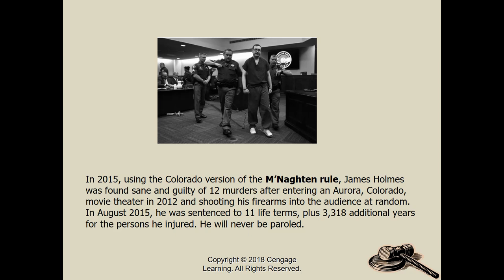James Holmes — back in 2012 when one of the Batman movies came out — dressed up as the Joker, went into a movie theater, and shot at random. He was found sane. He clearly suffered from some mental illness, but under the Colorado version of the McNaughton Rule, you couldn't prove that he lacked the cognitive or moral ability. So he was found guilty and received 11 life terms and 3,318 additional years.